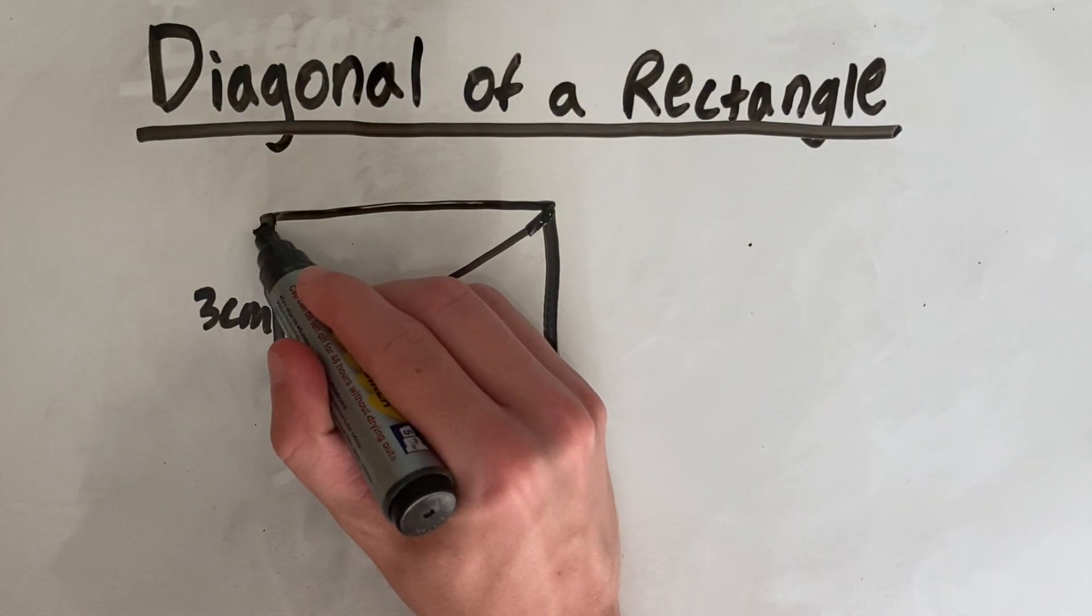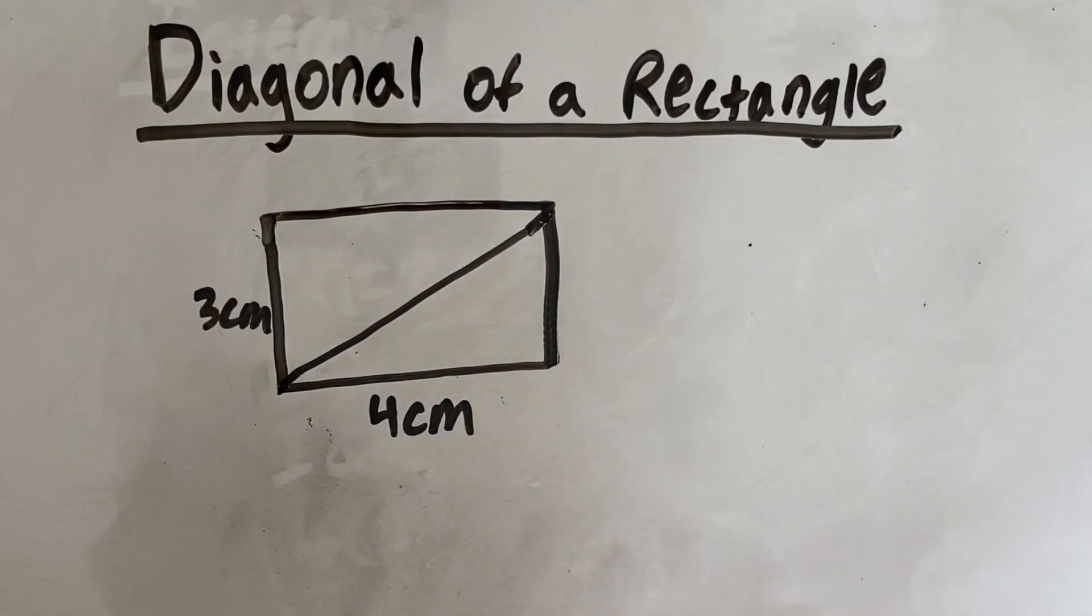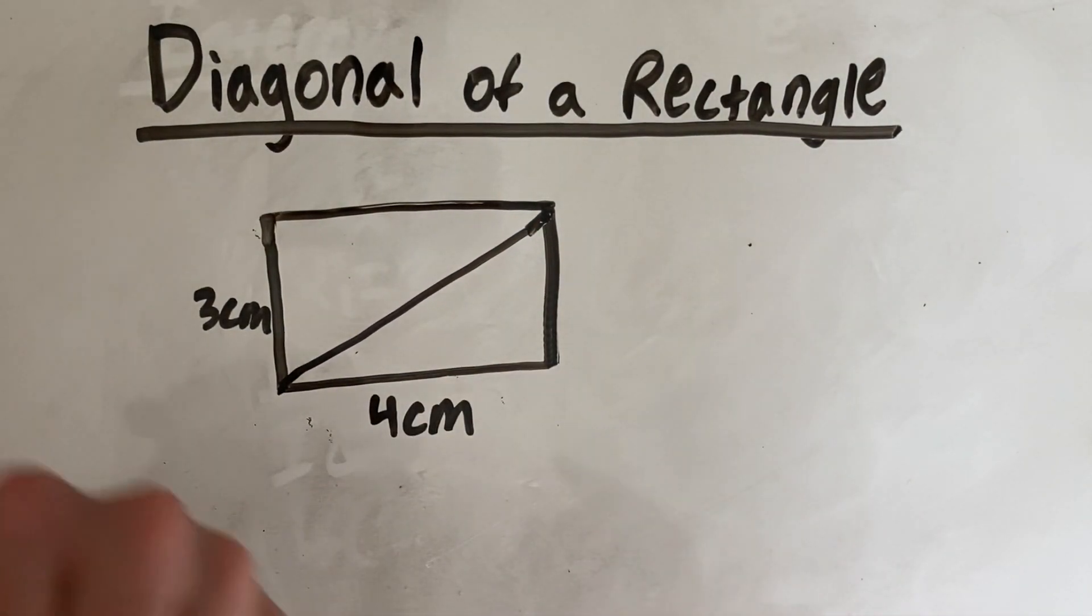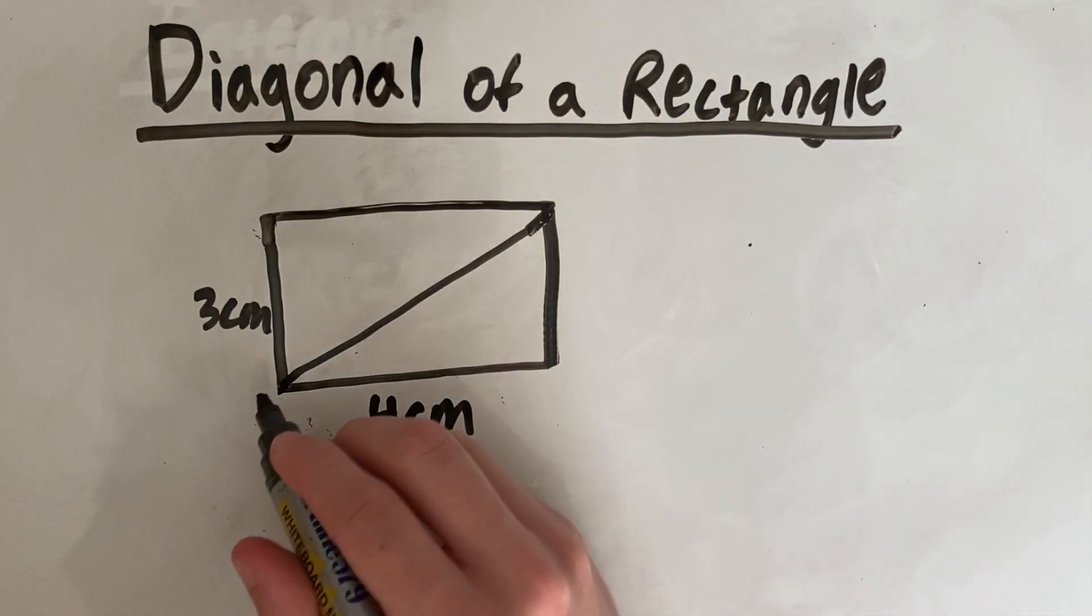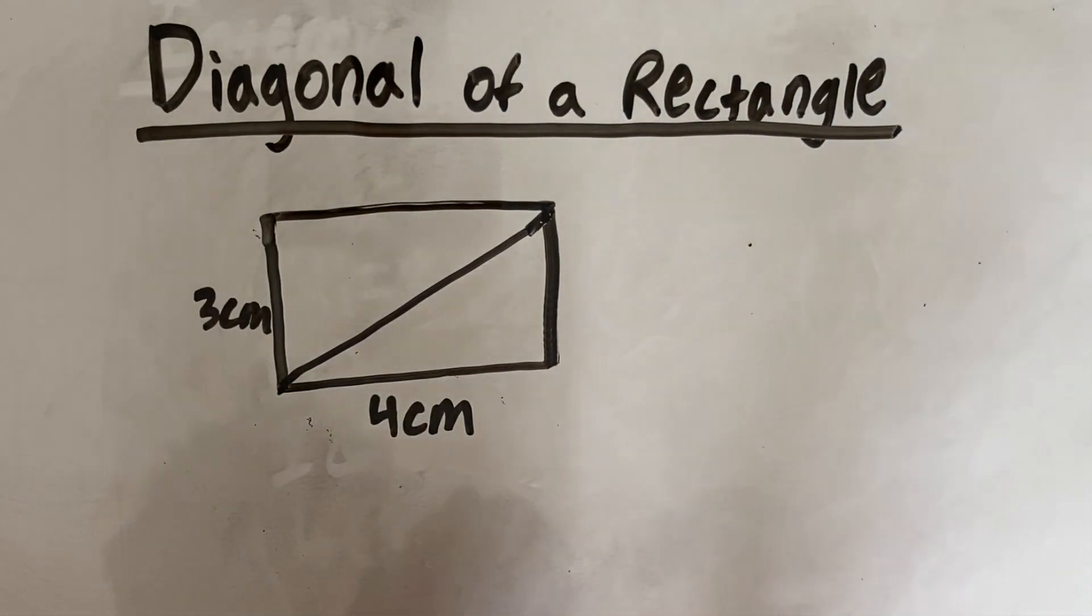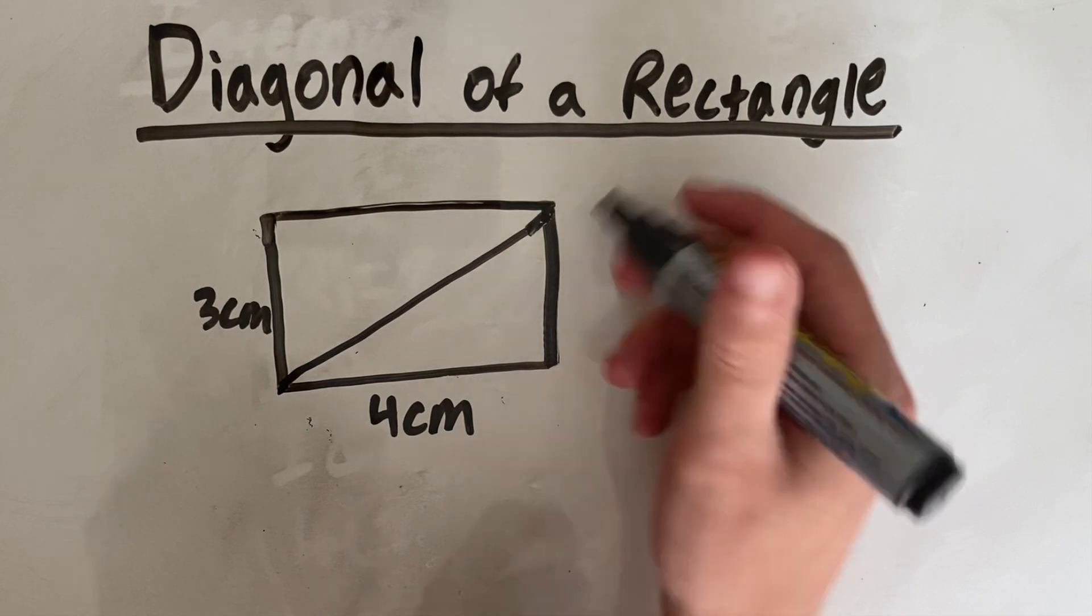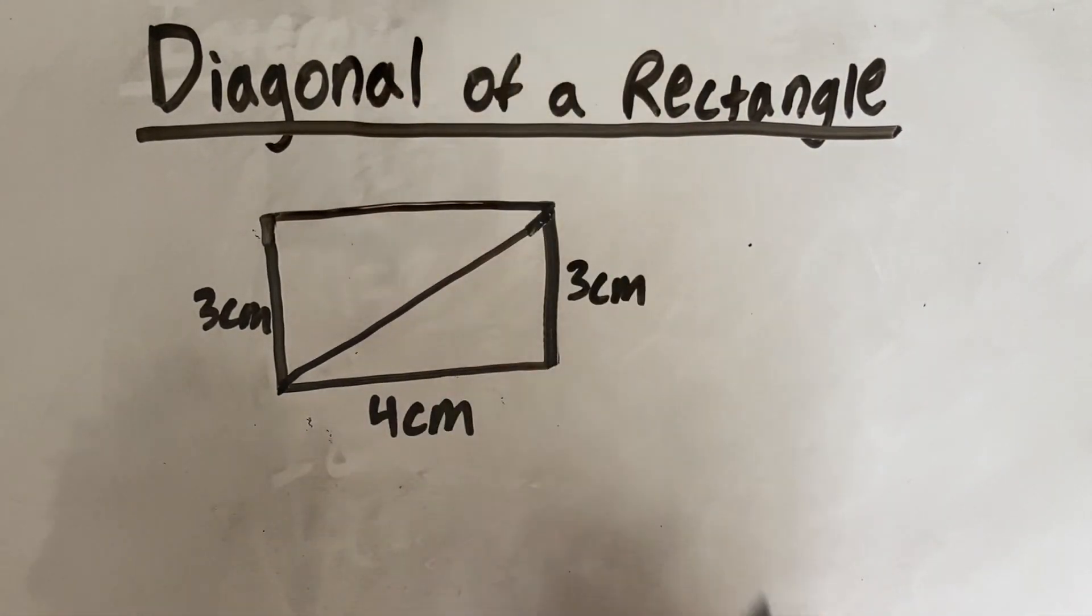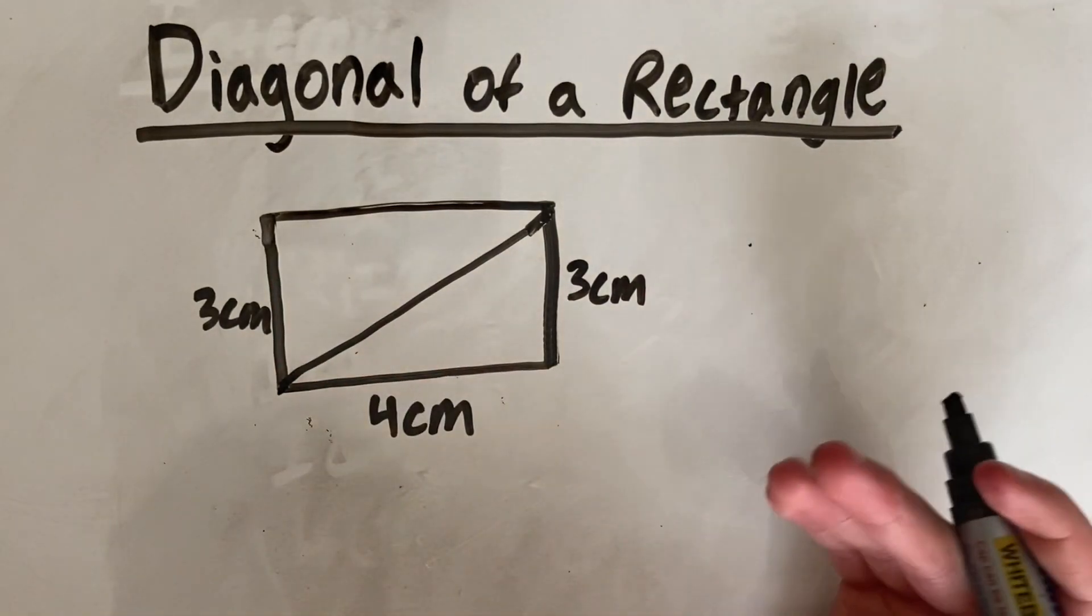Alternatively, we could have done this corner to this corner. They will be the same whether you do this way or this way because this is a rectangle, meaning all the sides are the same as well as these diagonals being the same. So this side over here will also be 3 centimeters, just like this side up here is also 4 centimeters.